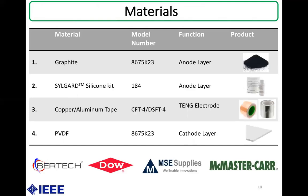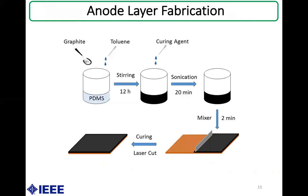In this work, the materials used are graphite, PDMS, copper aluminum tape, and PVDF. Initially, graphite and toluene were mixed into liquid PDMS pre-polymer by stirring for 12 hours. Following this, PDMS curing agent was added and the composite was sonicated for 20 minutes. Finally, the graphite-PDMS composite was mixed at 1800 rpm for two minutes to remove bubbles created during the stirring and sonication process. A uniform layer of the graphite-PDMS composite was bar-coated on a copper substrate and thermally cured.